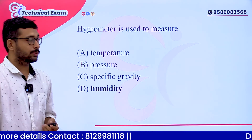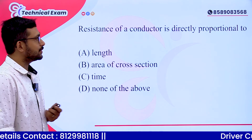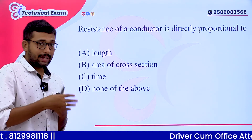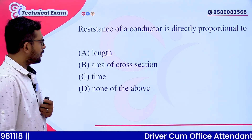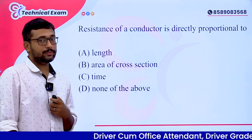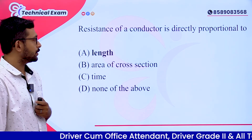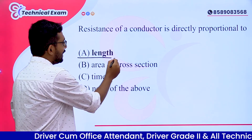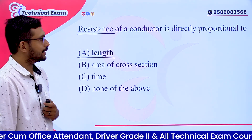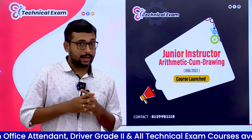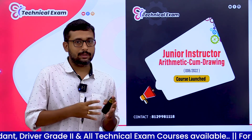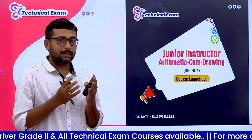Resistance of a conductor is directly proportional to — options: A. Length, B. Area of cross section, C. Time, D. None of the above. Resistance of a conductor is directly proportional to its length. Option A is correct. This is Part 2 of the junior instructor arithmetic drawing course on Competitive Cracker.